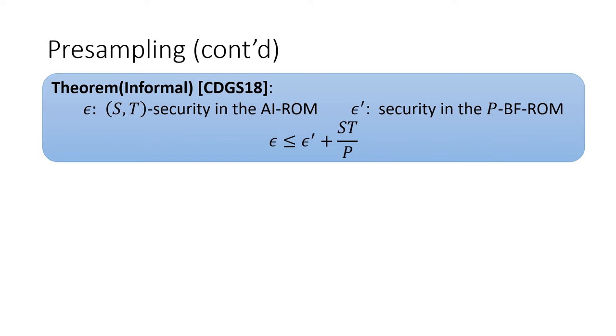The pre-sampling theorem says that, let epsilon be the maximum success probability of breaking an application in the AI-ROM, and it will be at most epsilon prime plus st over p, where epsilon prime is the maximum success probability in the corresponding p-bit-fixing random oracle model. And when p is roughly s times t, then epsilon is at most two times epsilon prime.